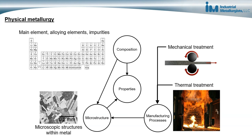This slide shows the relationship between the properties of a metal, its composition, microstructure, and manufacturing processes. By understanding this relationship and understanding how we can use the different tools available to us, we can modify and manipulate a metal in order to get specific properties.